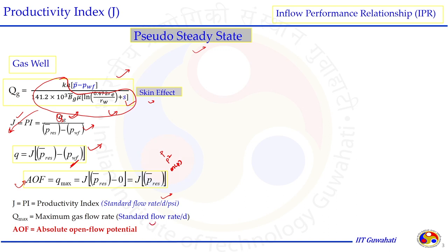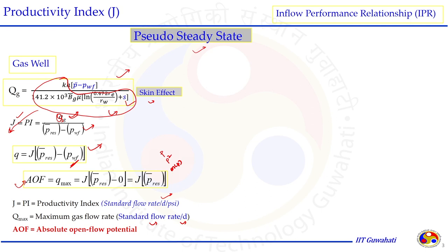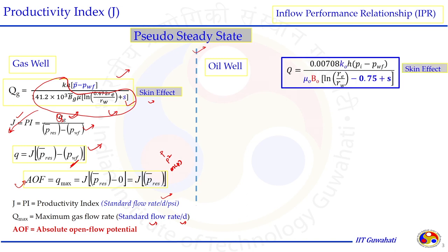For maximum flow rate, this is a standard flow rate per day, and the time unit could vary from day to month. AOF is the absolute open flow potential of a reservoir. Comparing the similar thing for the oil well — for incompressible or slightly incompressible fluid — the IPR equation also includes the skin factor, and the coefficient 0.75 can be adjusted to 0.472 as discussed. The symbol for permeability is K_O, viscosity is mu_O, and formation volume factor is B_O.